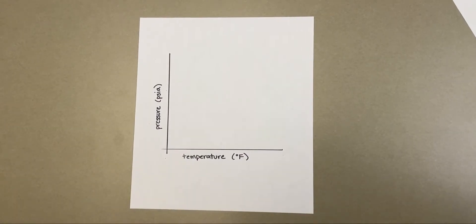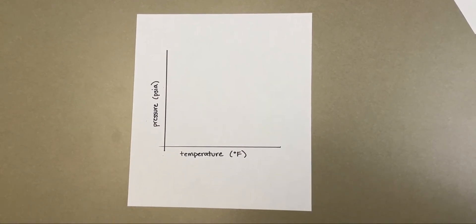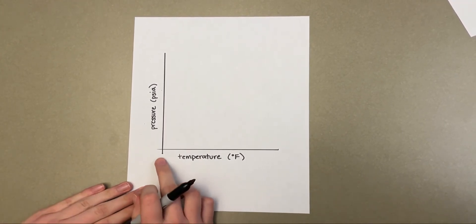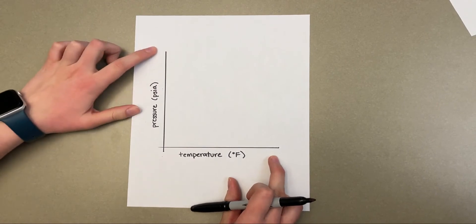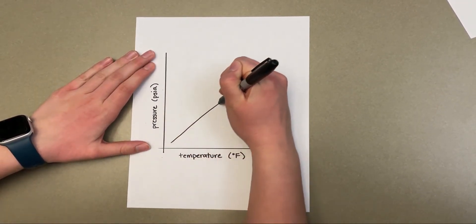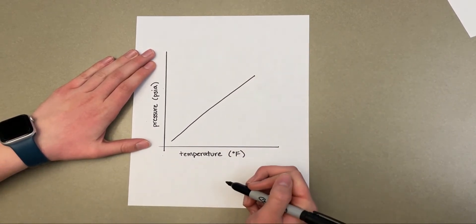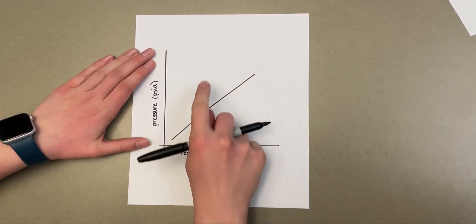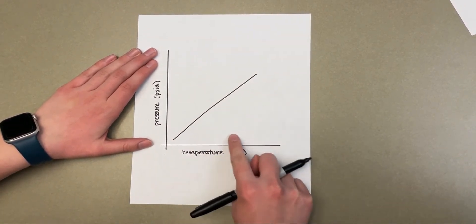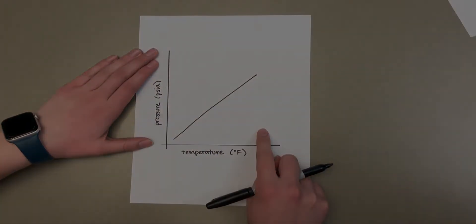Now I'm going to illustrate how to determine if hydrate forming conditions exist. Here you can see that I have drawn a simple pressure versus temperature diagram, and now I'm going to draw an arbitrary line that is representative of your specific gravity gas. If conditions are above the line, hydrates are able to form. However, if you are below the line, hydrate forming conditions do not exist.